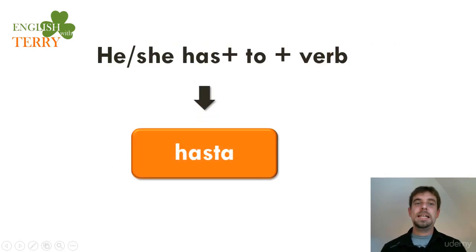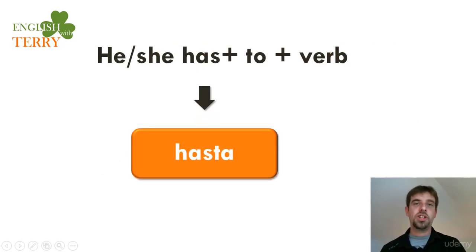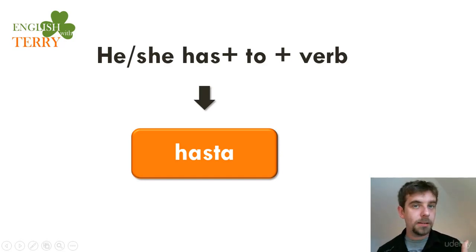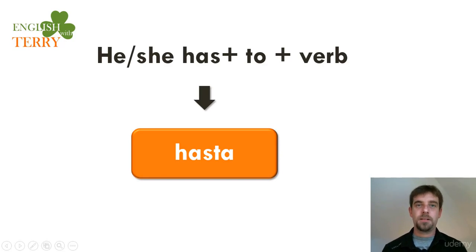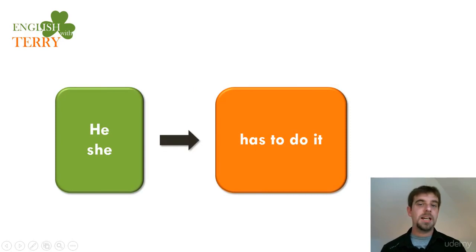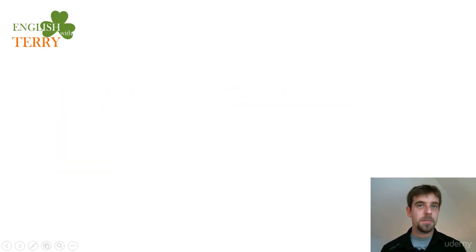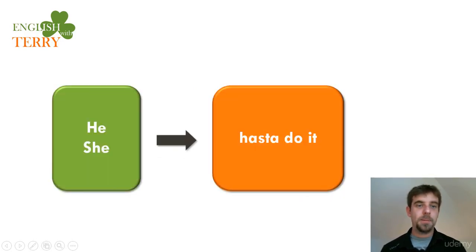He or she has to plus verb. He or she has to find a job. He has to call me. Has to. He has to. She has to. He or she has to do it, becoming 'he or she has to do it' in connected speech.